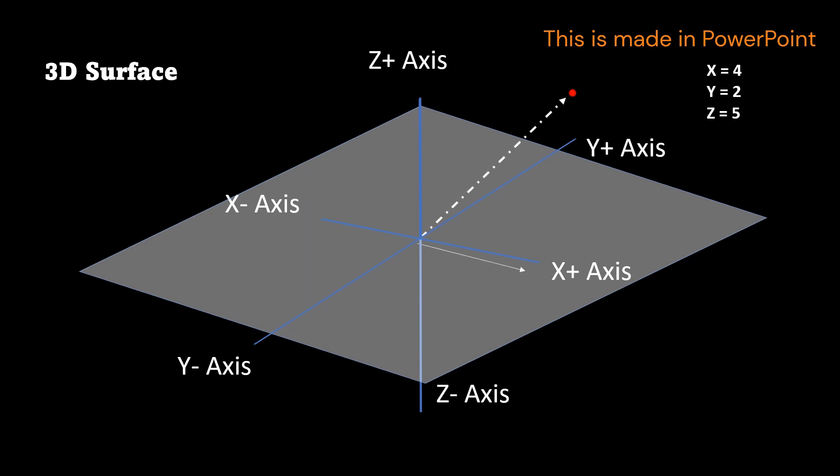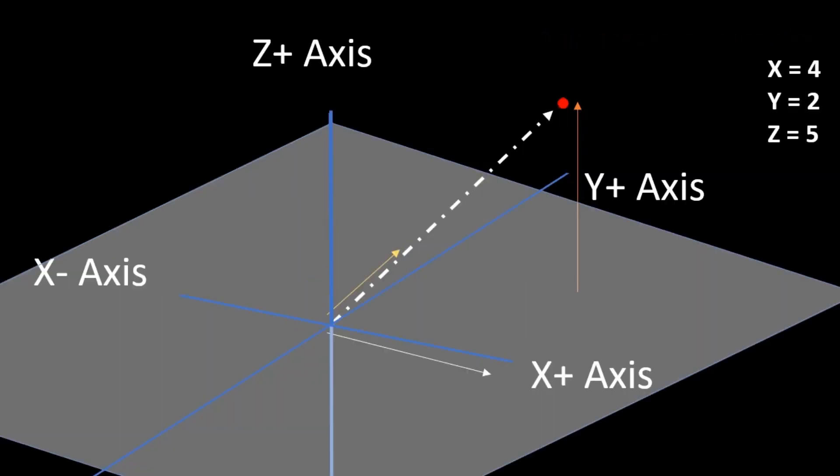In reality, this movement seems to happen in one direction but mathematically the movement happens in three different axes: x, y and z.